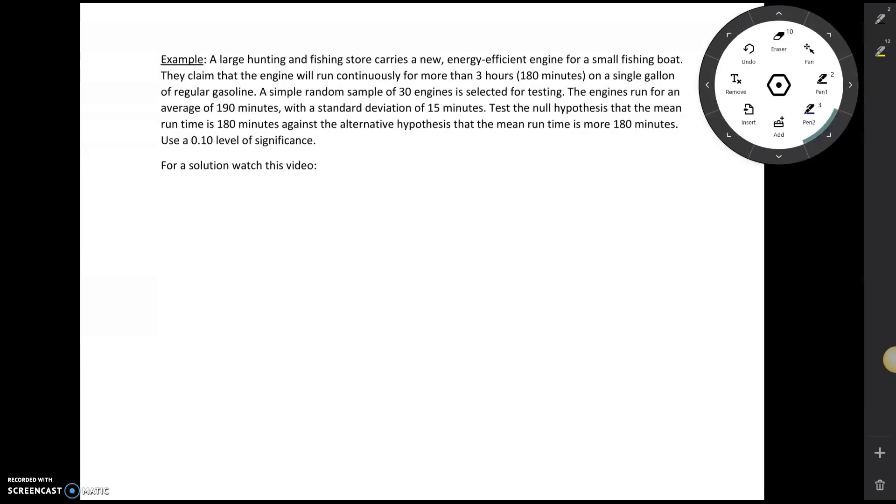A large hunting and fishing store carries a new energy efficient engine for a small fishing boat. They claim that the engine will run continuously for more than 3 hours or 180 minutes on a single gallon of regular gasoline. A simple random sample of 30 engines is selected for testing. The engines run for an average of 190 minutes with a standard deviation of 15 minutes. Test the null hypothesis that the mean runtime is 180 minutes against the alternative hypothesis that the mean runtime is more than 180 minutes. Use a 0.1 significance level.